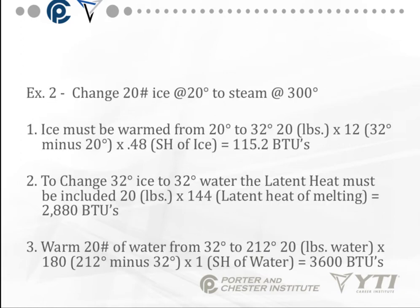Another example: we're going to change 20 pounds of ice to steam at 300 degrees. Our starting point is 20 degrees and our steam point is 300 degrees. We have two changes of state here — solid to a liquid, and liquid to a vapor. So we're taking the ice, raising it to 32 degrees, then it changes to water, then we go up to 212 degrees and it changes to steam.